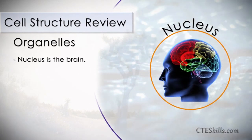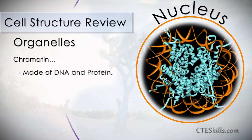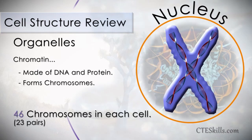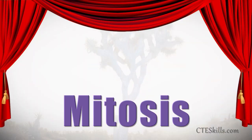Before we get started, here's a little backstory to catch you up to speed. The nucleus, which is the brain of the cell, has already initiated the process. Prior to the actual cell division, the nucleus has commanded the chromatin material, or DNA, to condense and organize itself into chromosomes — 46 of them to be exact. Now that we're ready, we'll begin with the actual cell division process called mitosis.